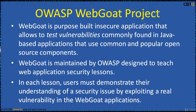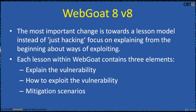Webgoat is a purpose-built insecure application that allows you to test vulnerabilities commonly found in Java-based applications that use common and popular open source components. Webgoat is maintained by OWASP, designed to teach web application security lessons. In each lesson, users must demonstrate their understanding of a security issue by exploiting a real vulnerability in the Webgoat application. The focus is on explaining ways of exploiting from the beginning. Each lesson within Webgoat contains three elements: explain the vulnerability, how to exploit the vulnerability, and mitigation scenarios.